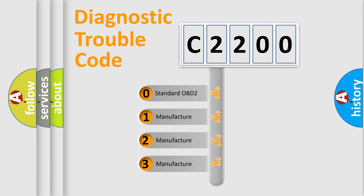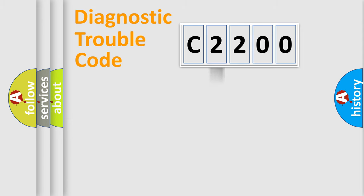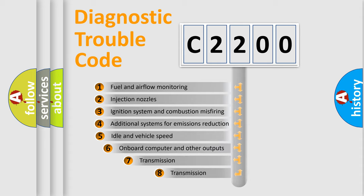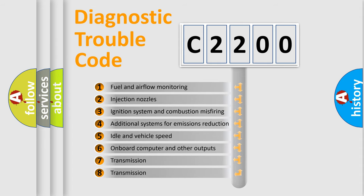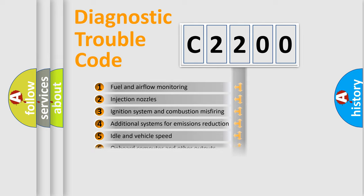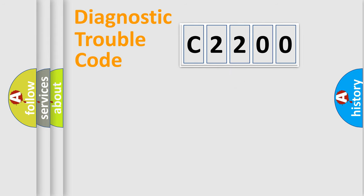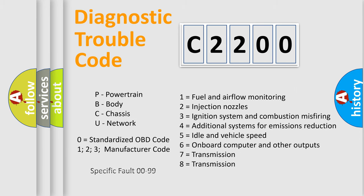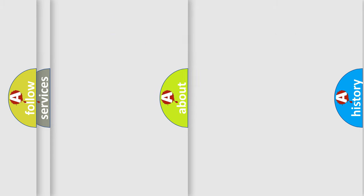If the second character is expressed as zero, it is a standardized error. In the case of numbers 1, 2, 3, it is a manufacturer-specific expression of the car-specific error. The third character specifies a subset of errors. The distribution shown is valid only for the standardized DTC code. Only the last two characters define the specific fault of the group. Let's not forget that such a division is valid only if the other character code is expressed by the number zero.